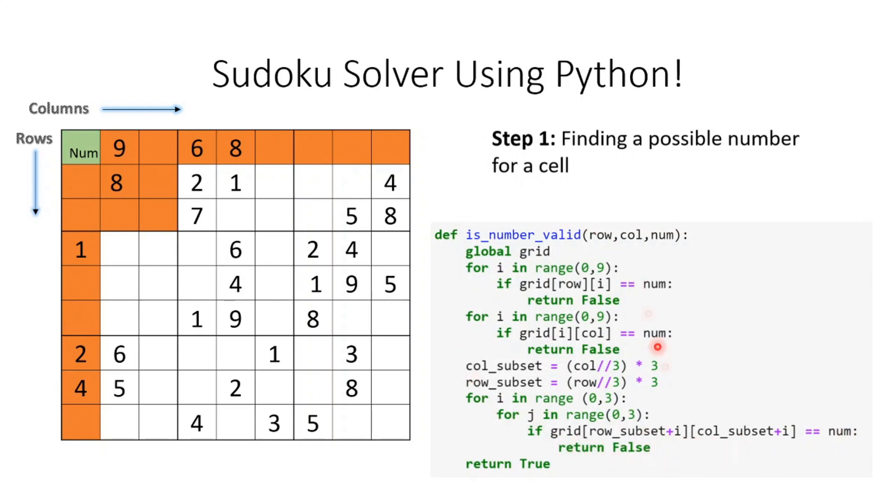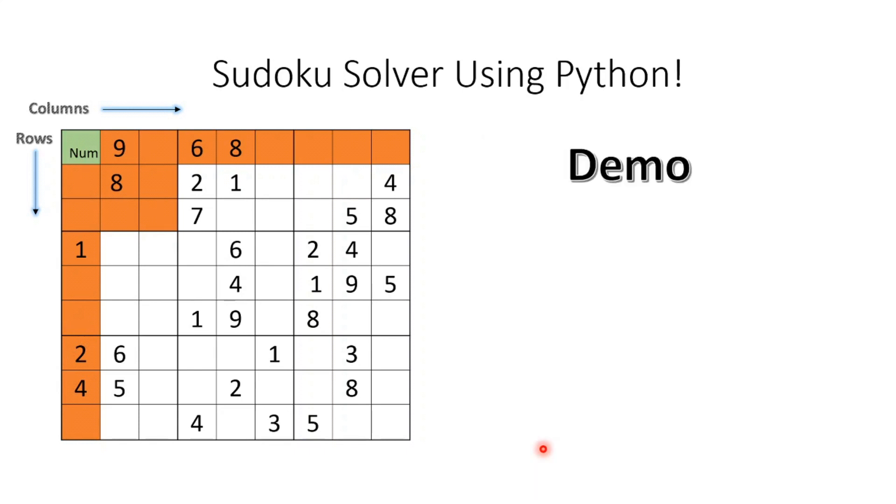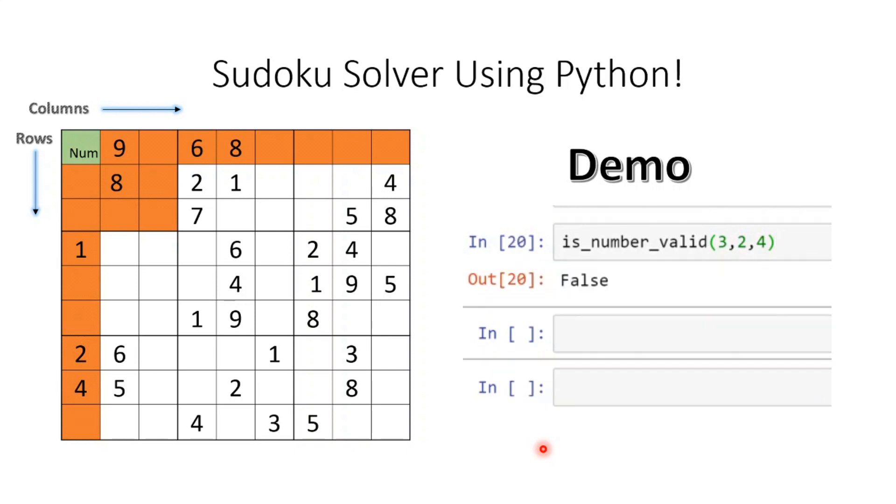If all conditions are true, meaning I don't find it in the column, row, or subset, then I return true. Let's see a quick demo. Here I give the cell as 3,2 with value 4 and it returns false. When I give value 5, it returns true.